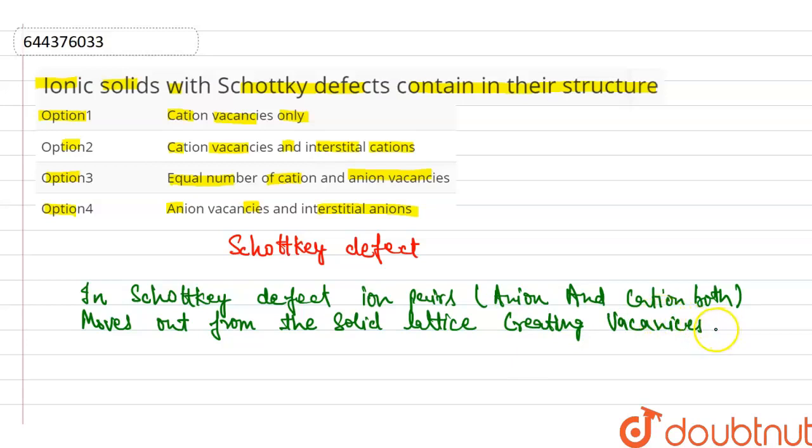And these defects are observed in solid lattice having similar size of cation and anions. Examples: NaCl, CaCl, AgBr etc.